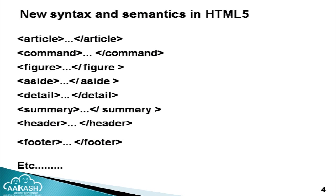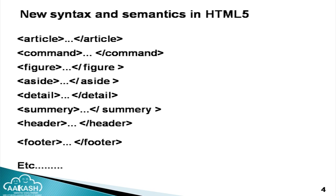I will tell you one by one exactly what each tag is used for. The article tag is used to define an article. Aside is used to define content aside from the page content. Detail defines additional detail that the user can show or hide. Summary defines the heading of the detail tag. Header gives information about the header of your page or section. Footer shows information about the footer of your document or section.